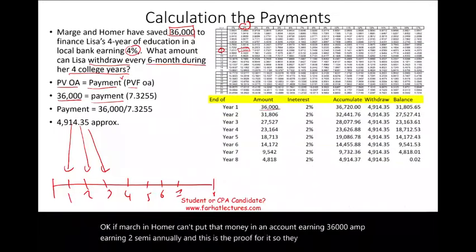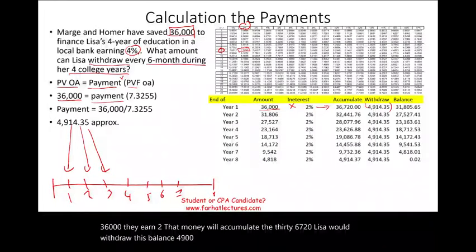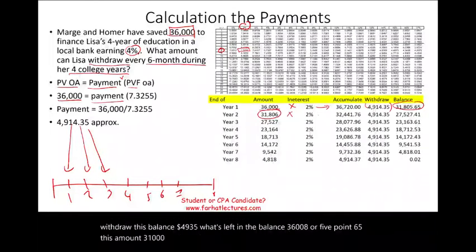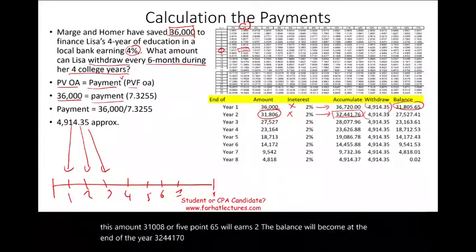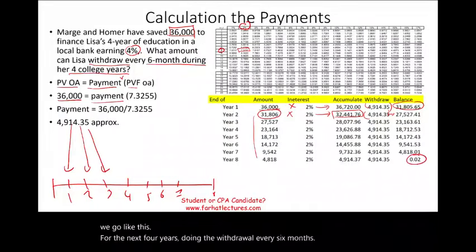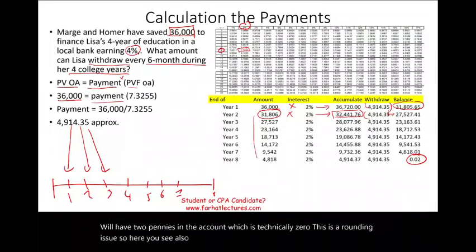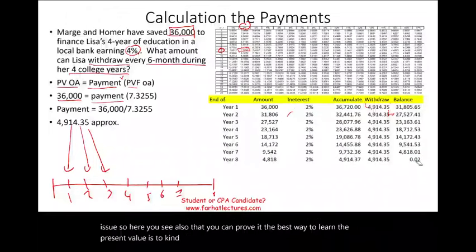As proof: deposit $36,000 earning 2% semi-annually; it accumulates to $36,720. Lisa withdraws $4,914; the remaining balance is $31,806. That earns 2%, becoming $32,441.76; Lisa withdraws $4,914, leaving $27,527. Continuing this for all eight periods, the account reaches essentially zero — just two cents due to rounding. This confirms that $4,914 every six months fully depletes the $36,000 investment at 2% semi-annual interest.